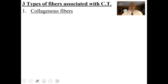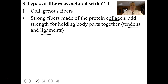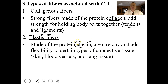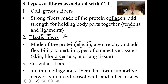These tissues can have different kinds of ground substance and different kinds of fibers. Collagenous fibers are really strong, made of proteins called collagen, and add great strength to body parts — like tendons or ligaments. There are also elastic fibers made of the protein elastin. These are stretchy and add flexibility — your skin, blood vessels, and lung tissue all have elastic fibers. There are also reticular fibers: thin collagenous fibers that form a supportive network in blood vessel walls and some other tissues.